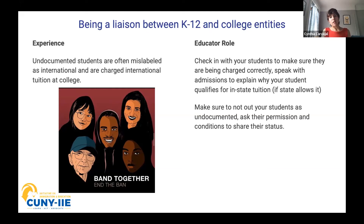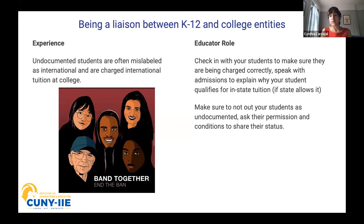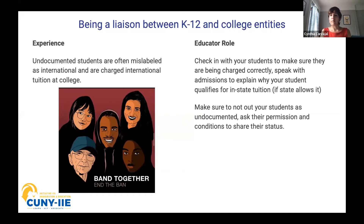In this practice, it's also important to make sure we're not outing our students as undocumented without their permission first. You want to say, 'I can call admissions to ask why you're being charged an international rate — do you mind if I mention that you are undocumented and qualify for in-state aid based on these eligibility requirements?' If the student is still uncomfortable, that's fine — instead, just ask admissions what the protocol is for undocumented students to qualify for in-state aid, and share that information with the student. That way we're being a liaison rather than having students navigate dangerous or exhausting situations on their own.